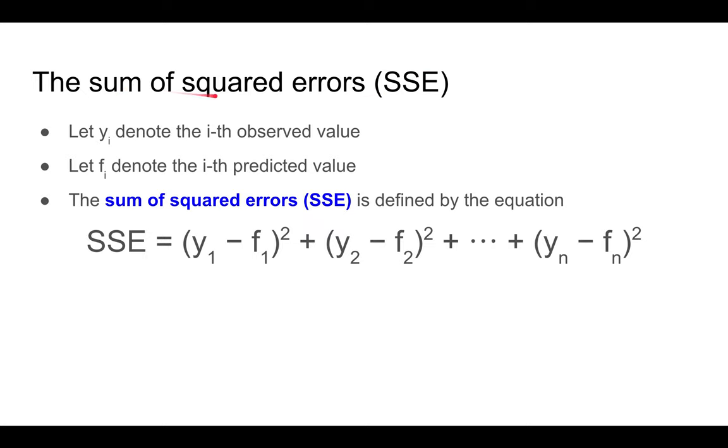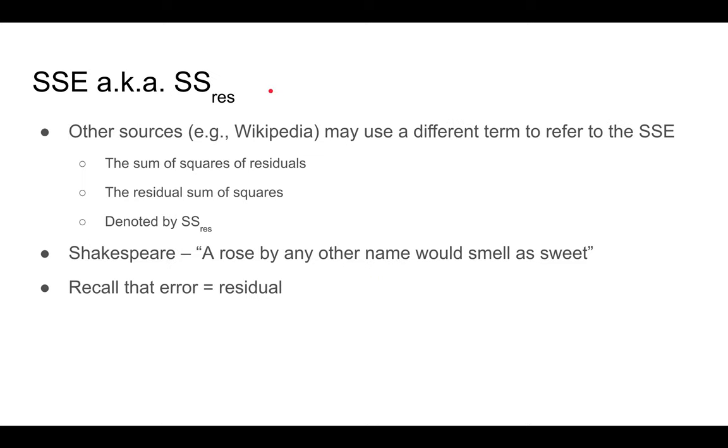First, let's look at the SSE. The SSE refers to the sum of the squared errors. What this means is you take the observed value in the data minus the predicted value from the model, you square it, and then you add up all of these squares. That's why it's called the sum of squared errors. Sometimes people refer to this as the sum of squares of residuals, or the residual sum of squares. But it's the same thing, just as Shakespeare noted that a rose by any other name would smell as sweet. Remember that the error is also sometimes referred to as the residuals.